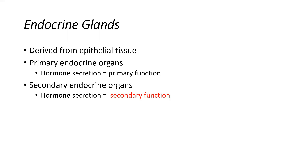We have primary and secondary endocrine organs. Primary endocrine organs have endocrine signaling — hormone secretion — as their main and essentially only function. Secondary endocrine glands have an entirely different main function, but they also play a role in the endocrine system. They do secrete hormones that have a function within the endocrine system, so we consider them as having a secondary endocrine function.